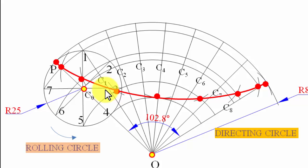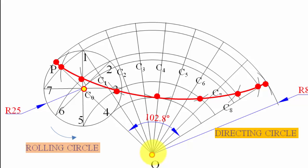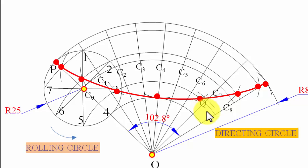Join all points P1 through P8 with a smooth curve — this is your hypocycloid. Now for the tangent and normal: this is the directing circle with center O. With O as center and a radius of 50mm, cut an arc on the hypocycloid. This intersection point is called Q — the point where the tangent and normal are to be drawn.